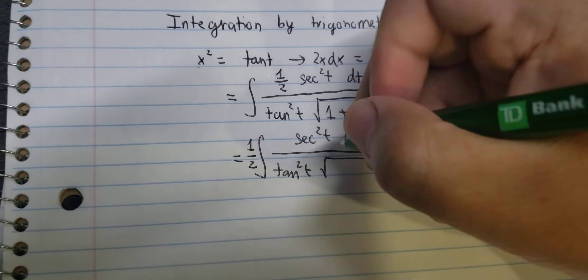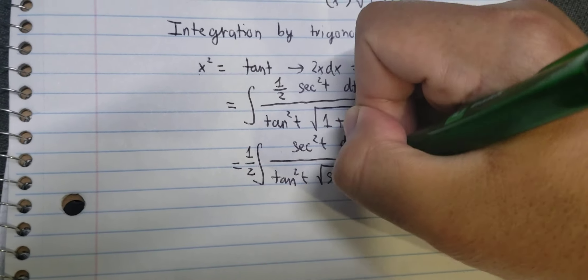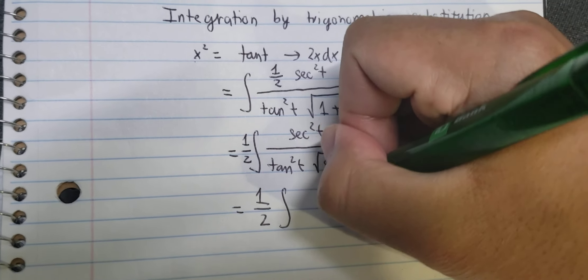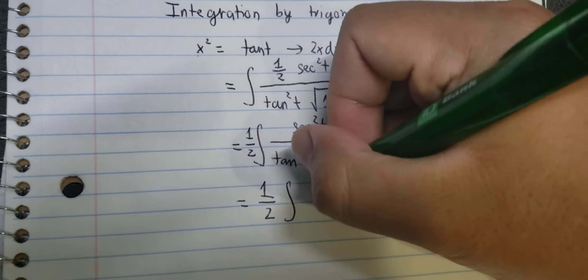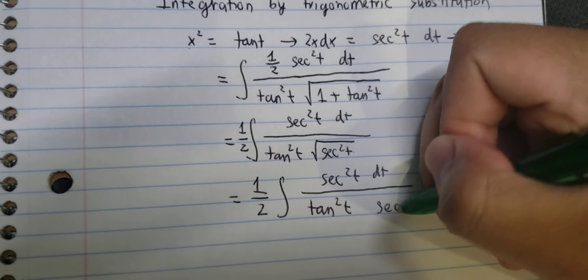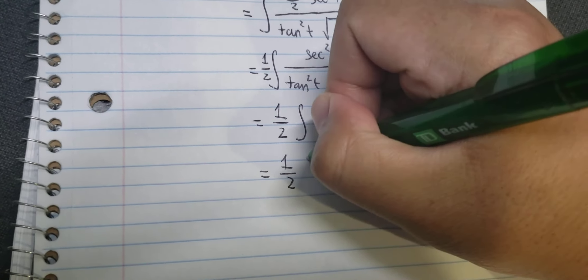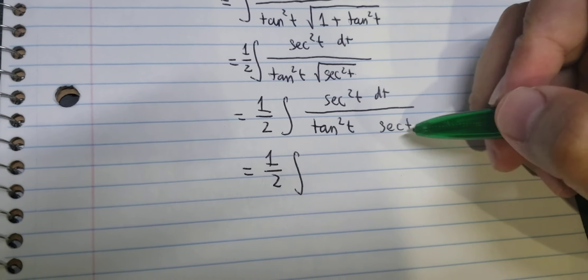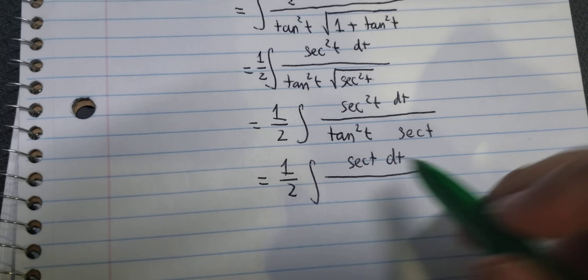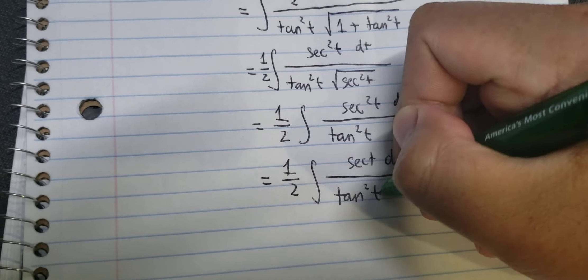So we put one over two in here. This one, this one, this one — that is about secant of t squared. And this one we have secant of t. Now we have secant of t and we can simplify. So this one we have tan(t) squared.